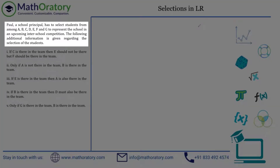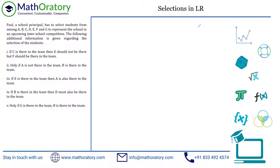The principal has to select students among these seven people to represent the school in an upcoming inter-school competition. The additional information gives us the conditions we have to work with. Whenever you have a conditionality type of problem, it's always good to first represent those conditions visually, because every time I don't want to go back and read the statements for each and every question. So I'm going to collect each of these conditions visually.